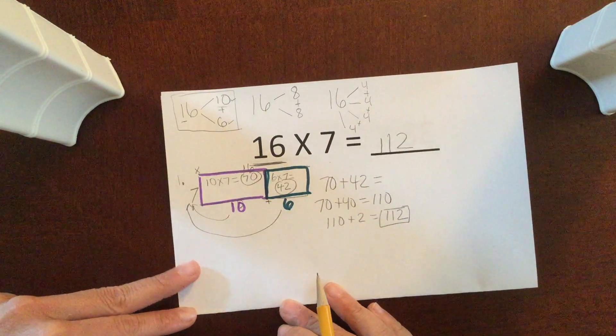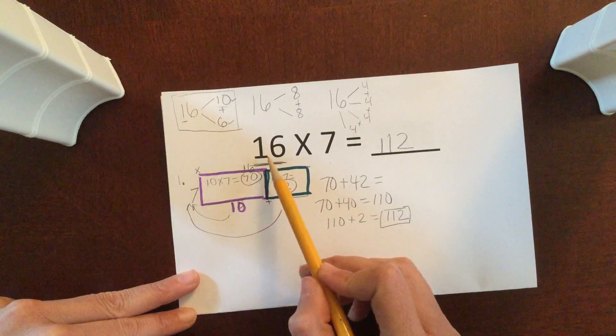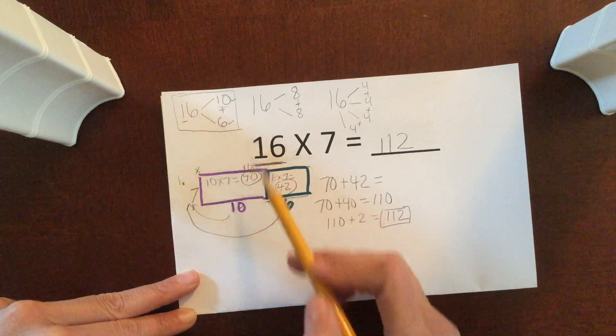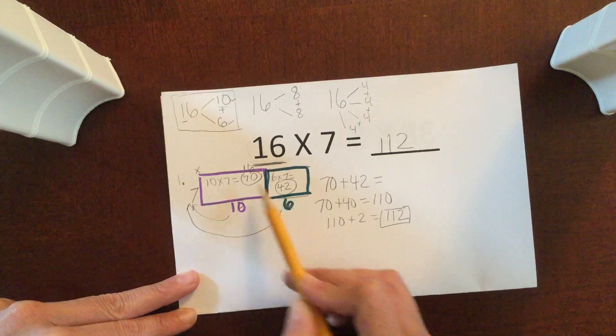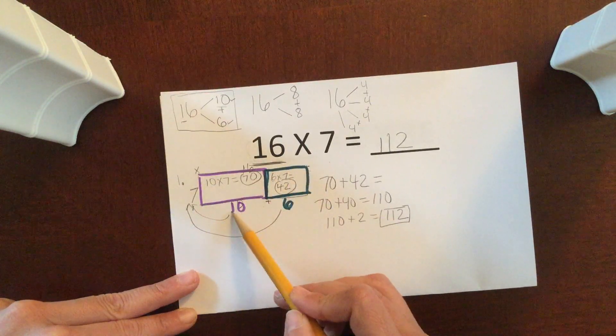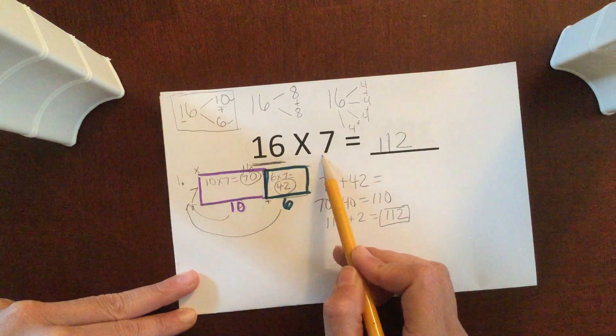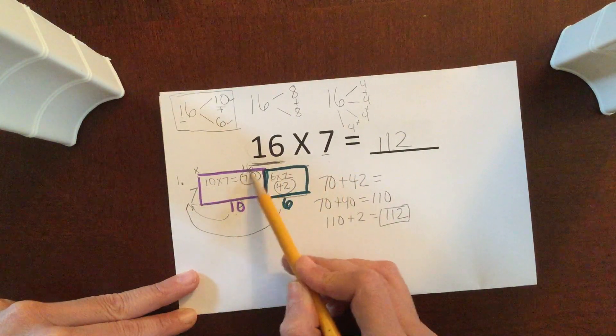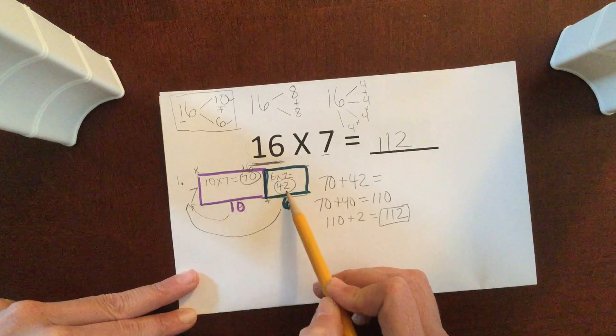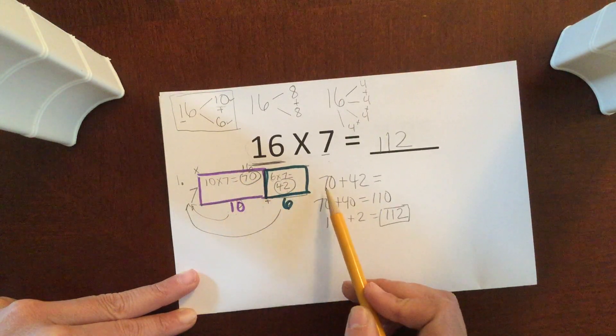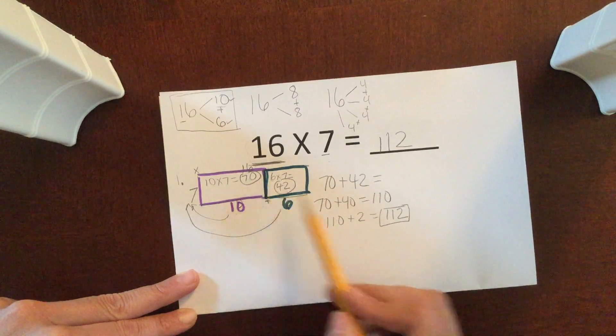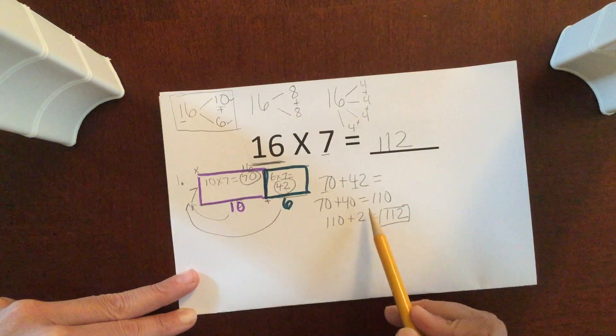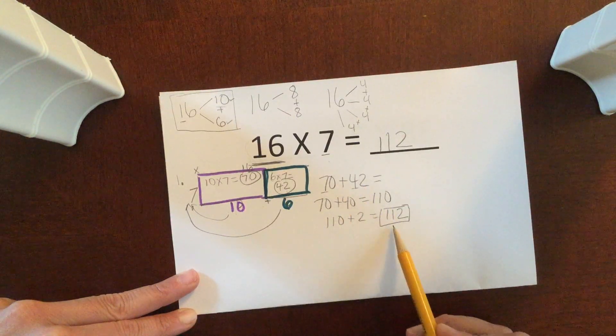And again, to walk you through the steps, first we decided how we wanted to break up our bigger number, 16, and I chose 10 and 6. 10 plus 6 is the same as 16. And then I took each piece and I multiplied it by the other factor, which was 7. So 10 times 7, that's easy, that's 70. And 6 times 7, that's a smaller fact, that's 42. Then I added up my two pieces. 70 plus 42. I took the 10, 70 plus 40. That's 110. And then plus the 2, 112.